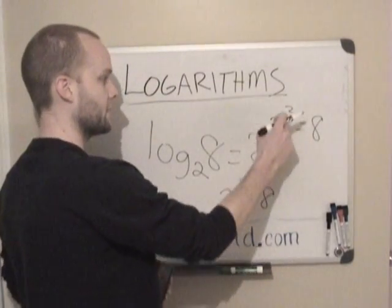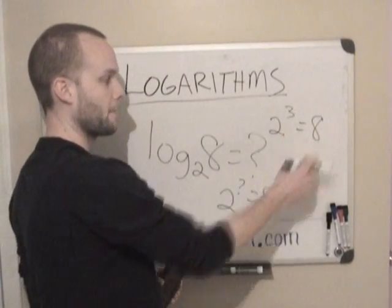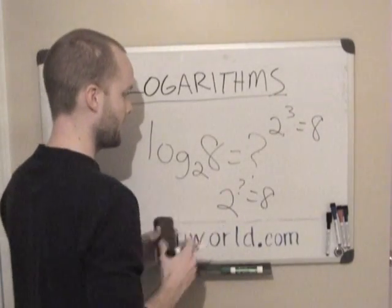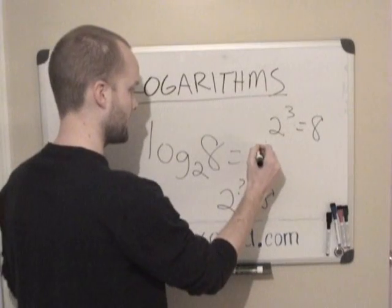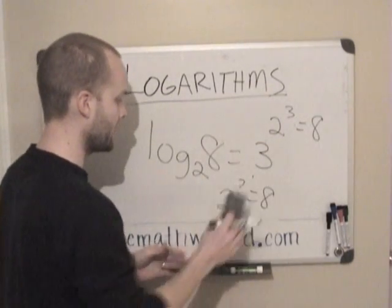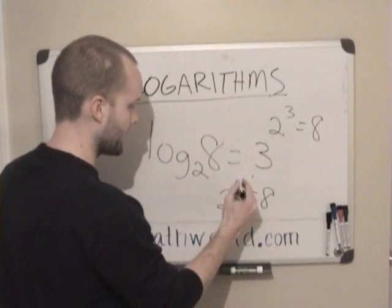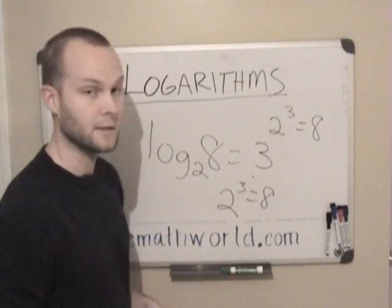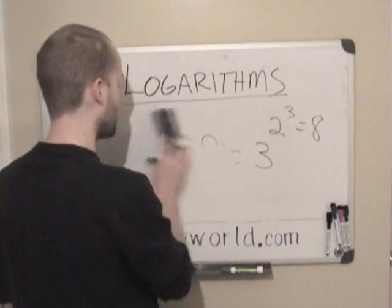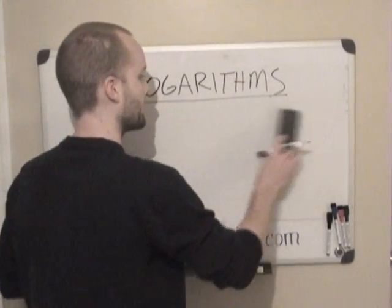And so in this case, since 2 to the third power, or 2 cubed, is 8, in the same way, this is 3. 2 to the third power is equal to 8, which written down here, 2 to the third power is equal to 8. And so this is how you're going to be using logarithms and solving them. We'll look at another example here.